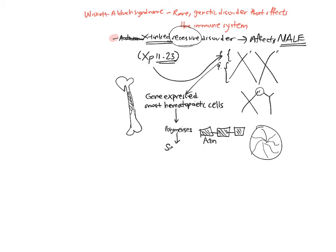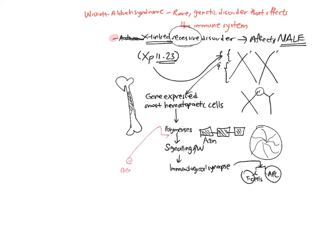This gene is also involved in the signalling pathway, particularly when the immunological synapse forms. Remember, when T cells and B cells get activated by antigen-presenting cells, they form an immunological synapse. In this condition, that process does not occur because the gene is defective. So when this pathway does not function, it leads to an impaired adaptive immune system, which makes sense.